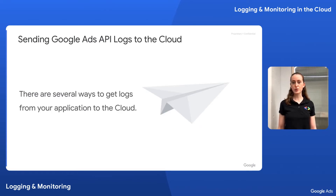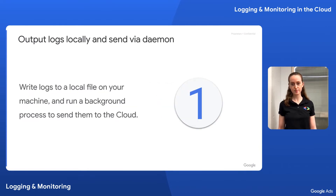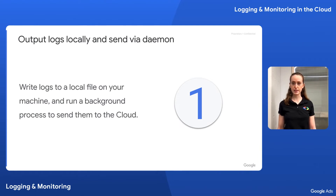If you want to store your Google Ads API logs to the cloud, there are several ways you can do so. I'll discuss the pros and cons of each solution, but ultimately this decision depends on your application needs and the capabilities of your toolset. One option is to output your logs locally and then collect and send them in a background process on your machine. For instance, you could update your client library configuration to specify a destination file for the logs output and set up a daemon process that parses the file and posts data to your chosen cloud provider.